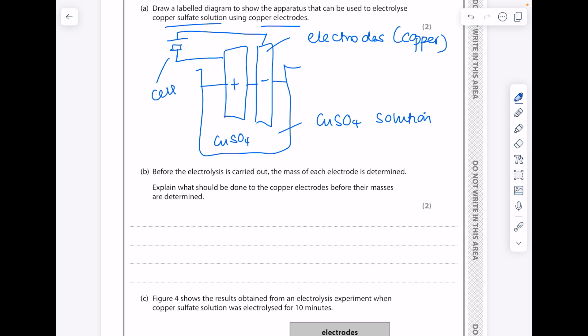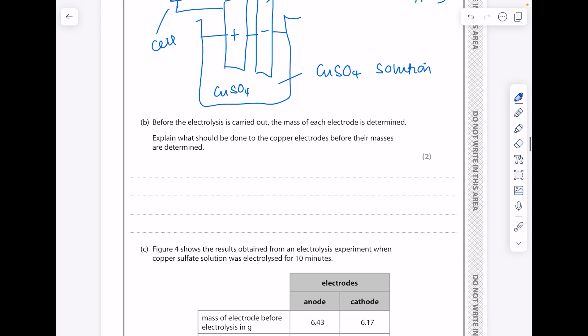Before the electrolysis is carried out, the mass of each electrode is determined. Explain what should be done to the copper electrodes before their masses are determined. Well, you need to remove any oxide layer present using wire wool.